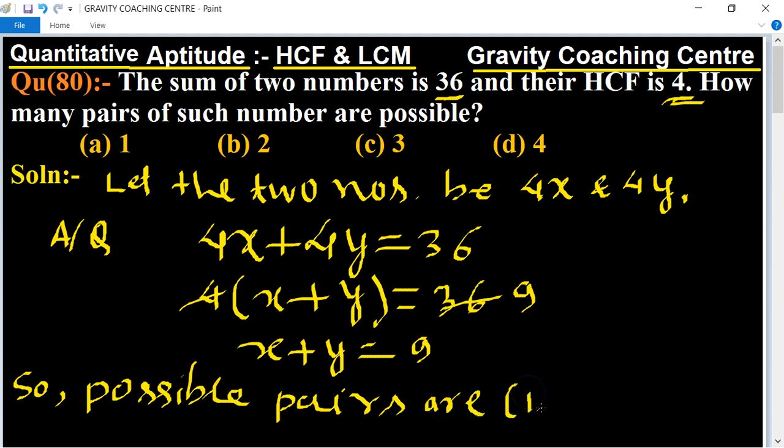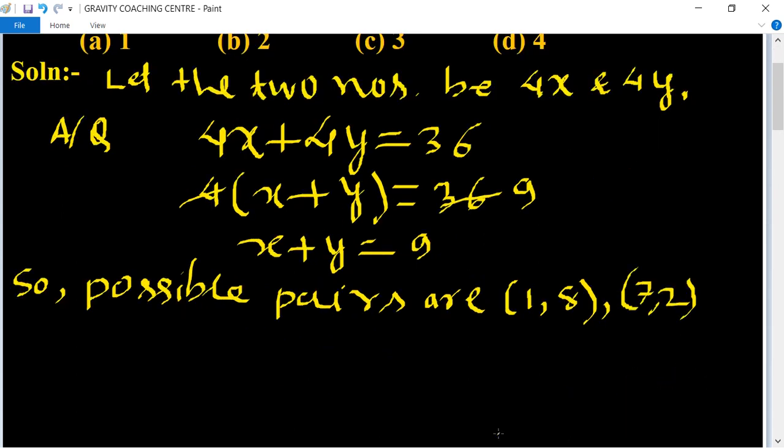One comma eight, and seven comma two, and four comma five. Always keep in mind, the numbers should be co-prime. Always taking co-prime numbers.